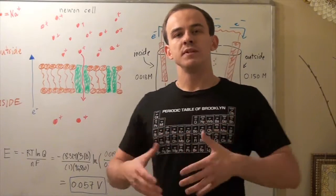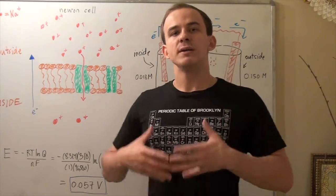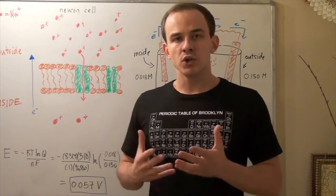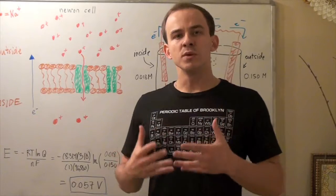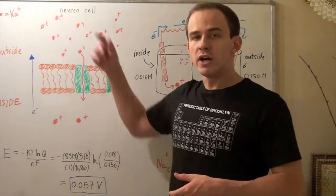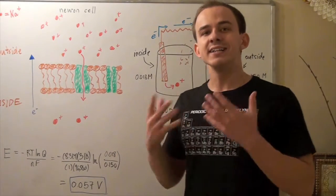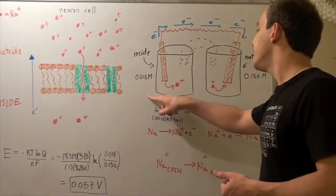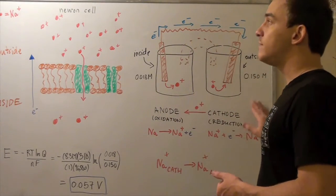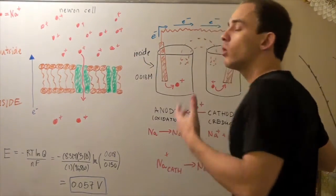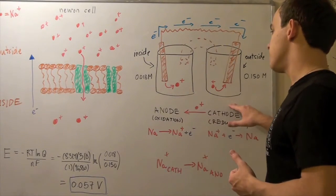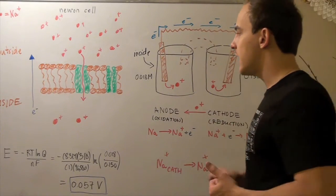In this lecture, my goal will be to explain a biological process using chemistry. I will show you that the movement of ions across the cell membrane in a neuron cell is identical to the movement of ions in a concentration cell. In fact, a neuron cell is a more complex version of a concentration cell. So let's begin.